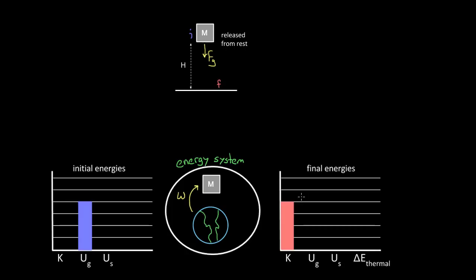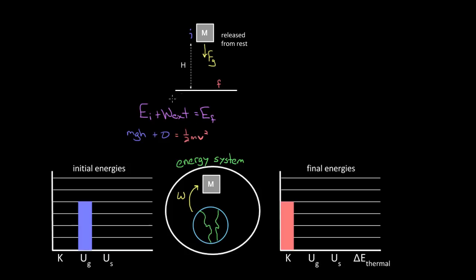Something really useful about LOL diagrams is that you can translate them straight into a conservation of energy equation: whatever initial energy you start with, plus any external work done, has to equal the final energy. External work is how much energy gets transferred into the system. For our particular scenario, we started with potential energy MGH, plus external work — which was zero since there was only internal work — and that equals the final energy, which is kinetic energy one-half MV squared. If you had numbers, you could plug into this formula and solve for height or speed.